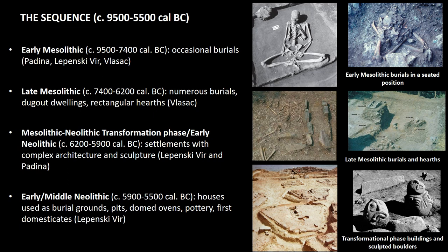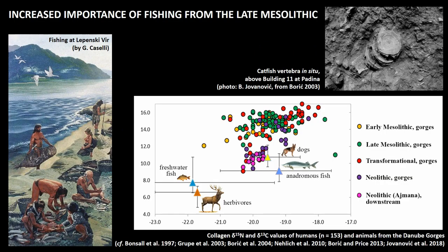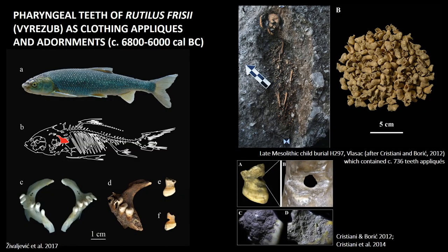dugout dwellings, and greater reliance on fishing. Perhaps the best known are the so-called transformational Mesolithic-Neolithic settlements, the most famous being Lepenski Vir — shown in the bottom photo — a settlement consisting of numerous buildings of trapezoidal shape and famous sculptures representing human or human-fish-like beings. With the late Mesolithic there seems to be a greater reliance on fishing and more time spent by these human groups on the river coast, manifested in both archaeological and isotopic evidence. Alongside this, there seem to be new ways these human-fish relationships are materialized.